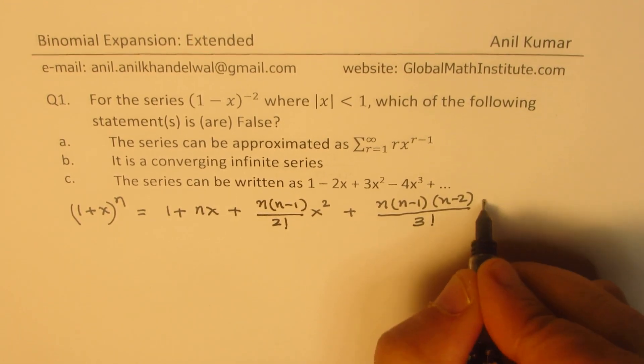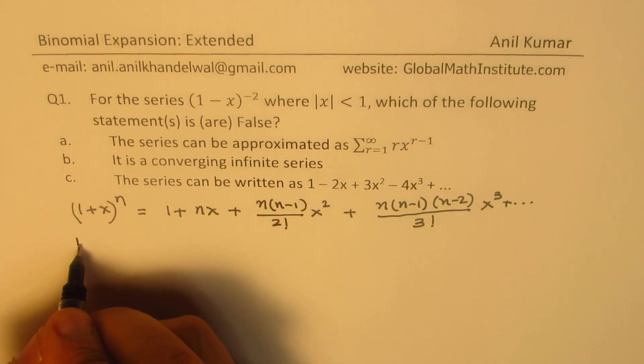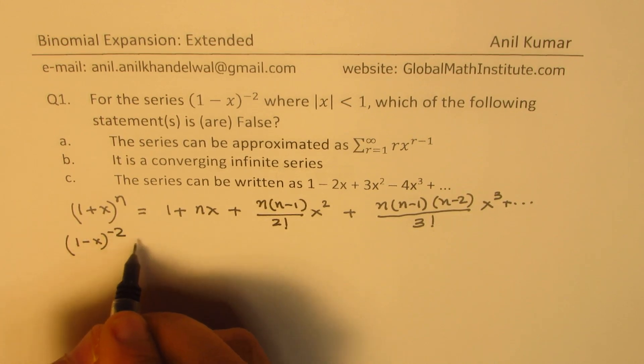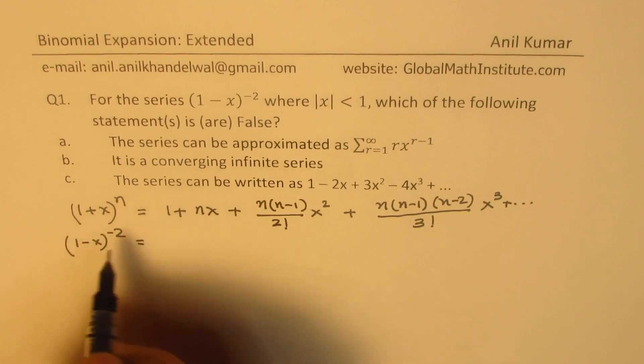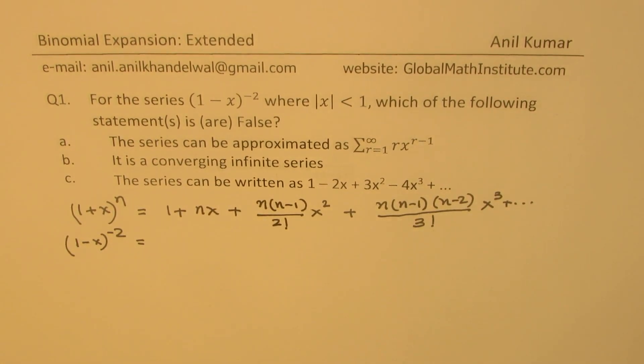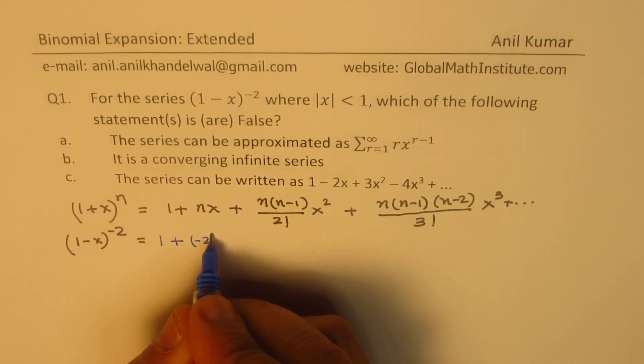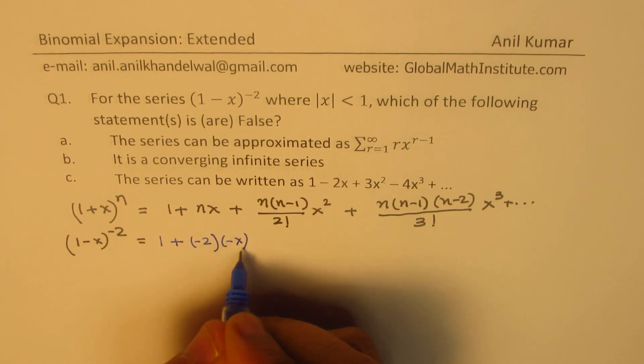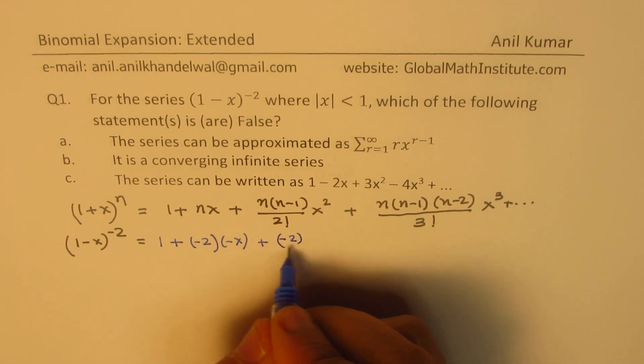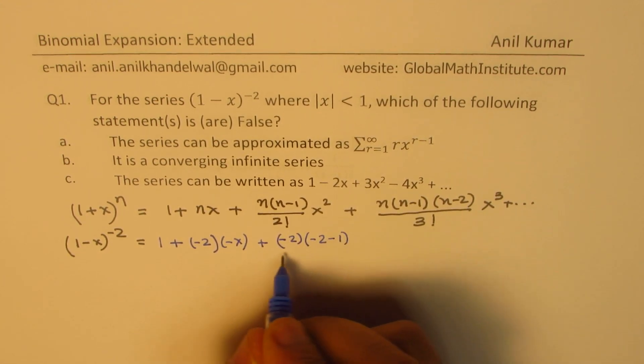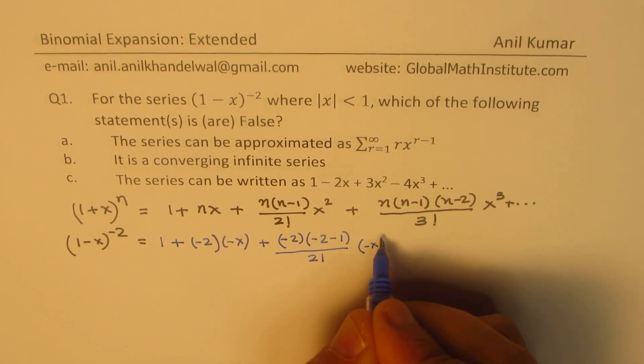In our case, we have (1 - x)^(-2). So n is -2 and x is really -x. We substitute this and rewrite. What we get is 1 + (-2)(-x) + (-2)(-2-1)/2!·(-x)² + (-2)(-3)(-4)/3!·(-x)³ + and so on.